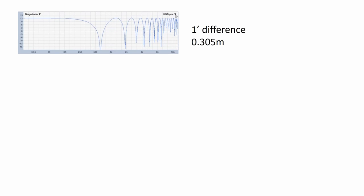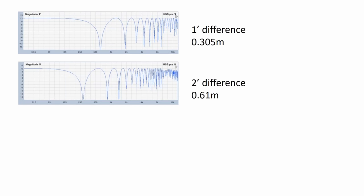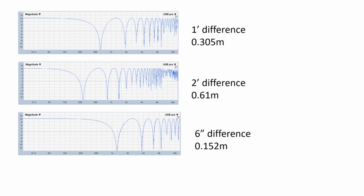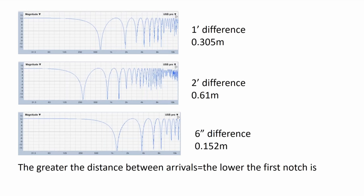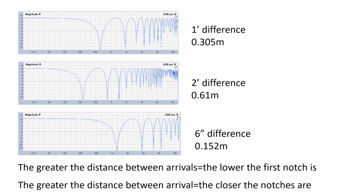Here are some examples of what it looks like — this is an electronic measurement, so this is textbook perfect comb filtering. A one-foot difference, you have notches starting at a little over 500 Hz — around 560. A two-foot difference is going to be lower, since a longer difference means lower frequency. Half the distance and the notches are wider apart but start up higher. The greater the distance between arrivals, the lower the first starting frequency and the closer the notches are together in Hz.